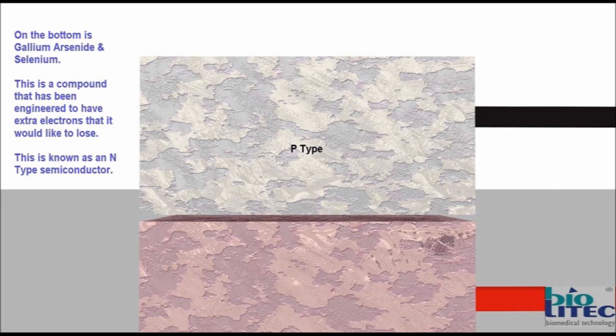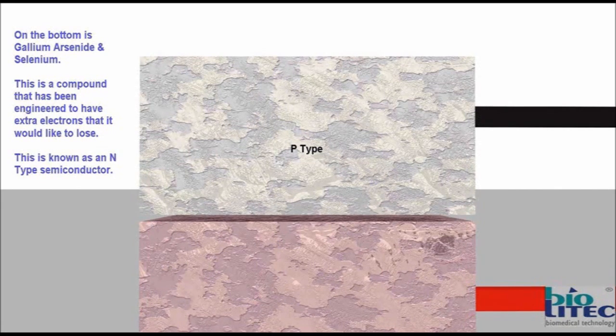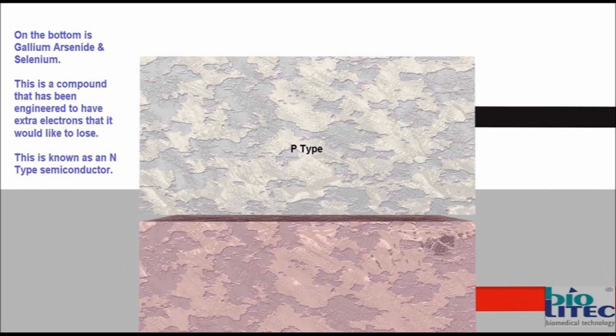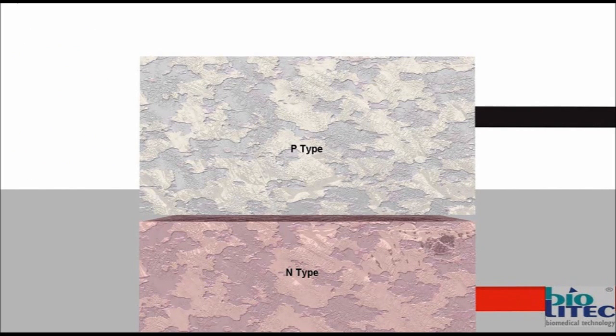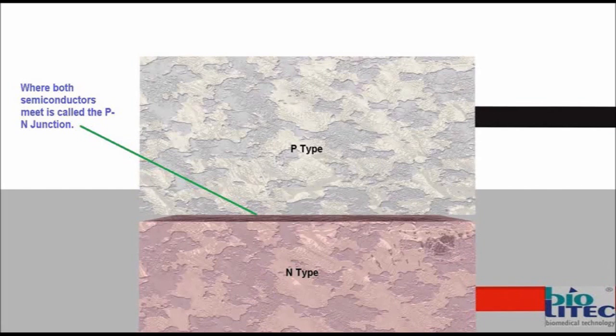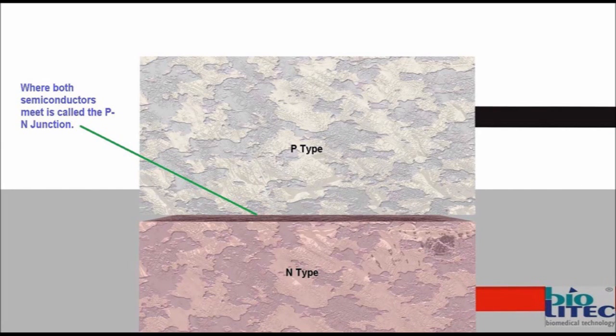On the bottom is gallium arsenide and selenium. It is a compound that has been engineered to have extra electrons that it would like to lose. This is known as an N-type semiconductor. Where both semiconductors meet is called the P-N junction.